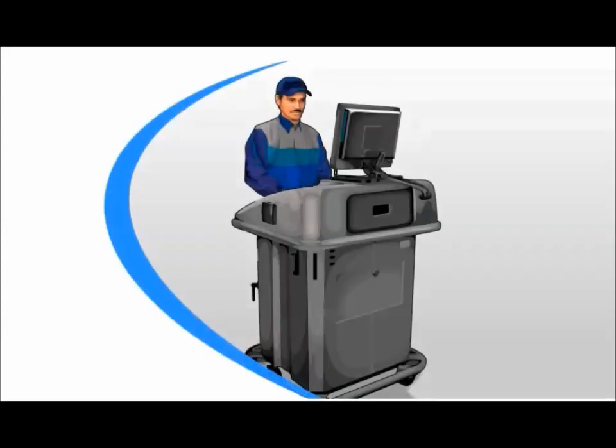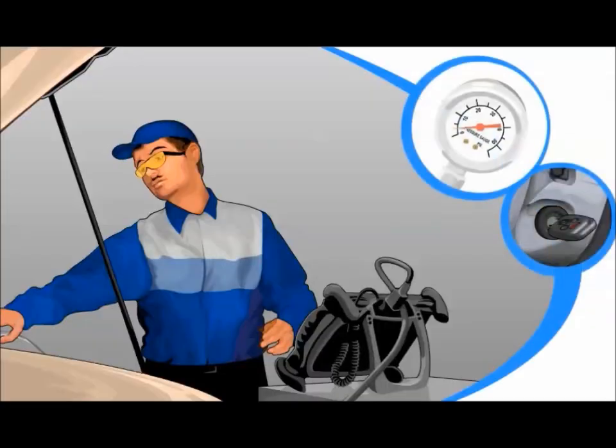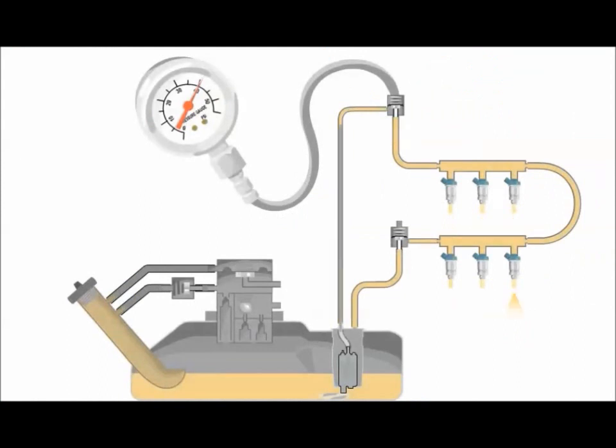Fuel pressure must be within specifications for the ECM-PCM to be able to control the air-fuel ratio accurately. Low fuel pressure can be caused by low or no pump output, restricted strainer, restricted filter, restricted supply line, or a stuck open or weak spring in the regulator.